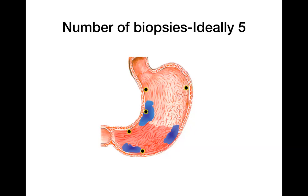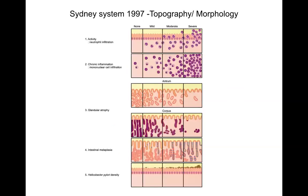The number of biopsies that ideally should be taken is five — from the body, incisura, antrum, and corpus separately. If biopsies are obtained separately from the body and antrum, we can apply a classification system based on topography and morphology. We look at the degree of neutrophilic infiltration, lymphoplasmacytic infiltrate, glandular atrophy, intestinal metaplasia, and H. pylori density in each biopsy. Based on the grade — mild, moderate, or severe — we call it antral-predominant, corpus-predominant, or multifocal atrophic gastritis.